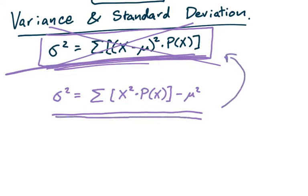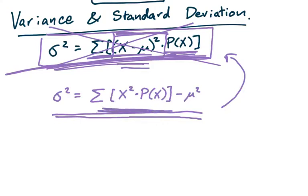Notice that since we don't have to keep subtracting the average for each and every data value and then multiplying times the individual probability and adding all of those things up, instead we just do this procedure with the data values and their probabilities, and leave the average out of it until the very end, when we subtract it squared away.